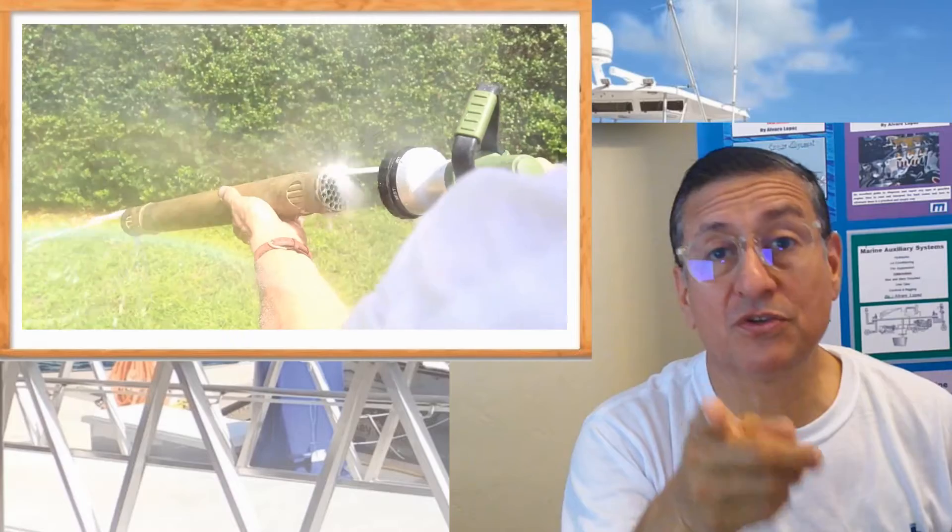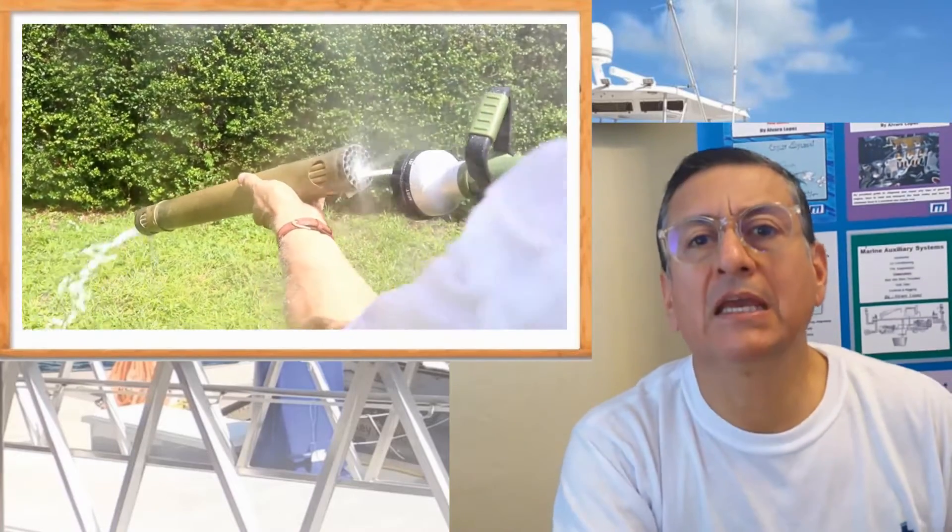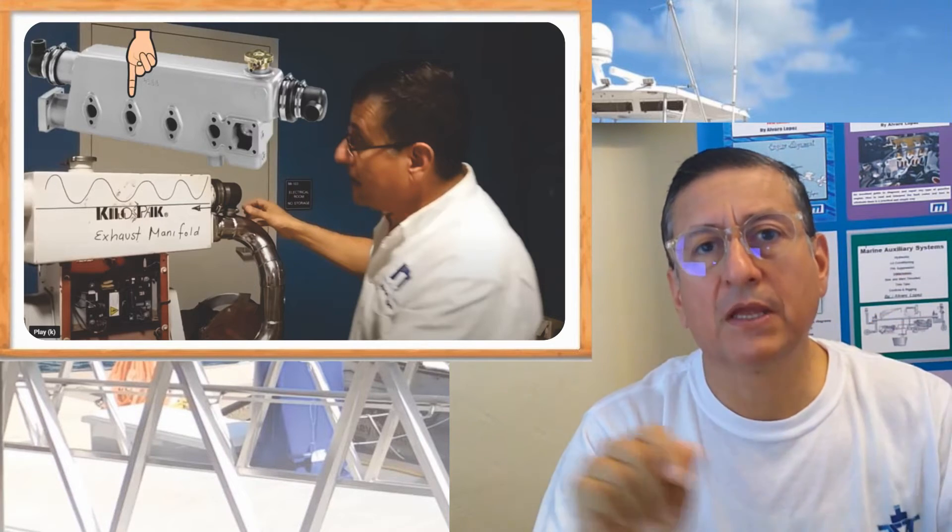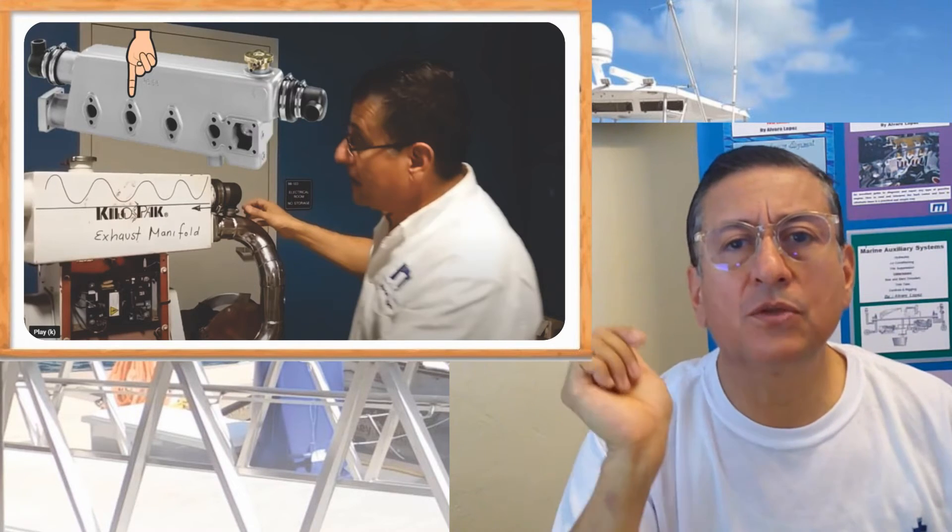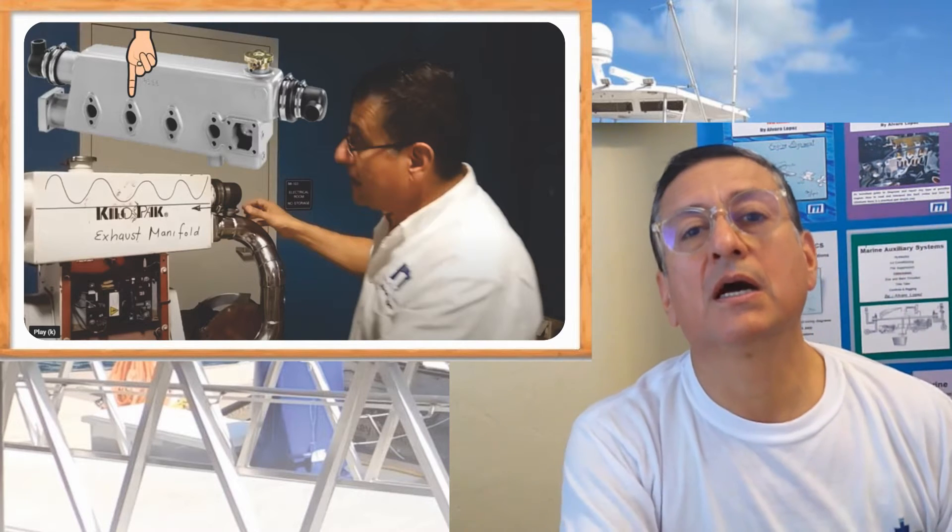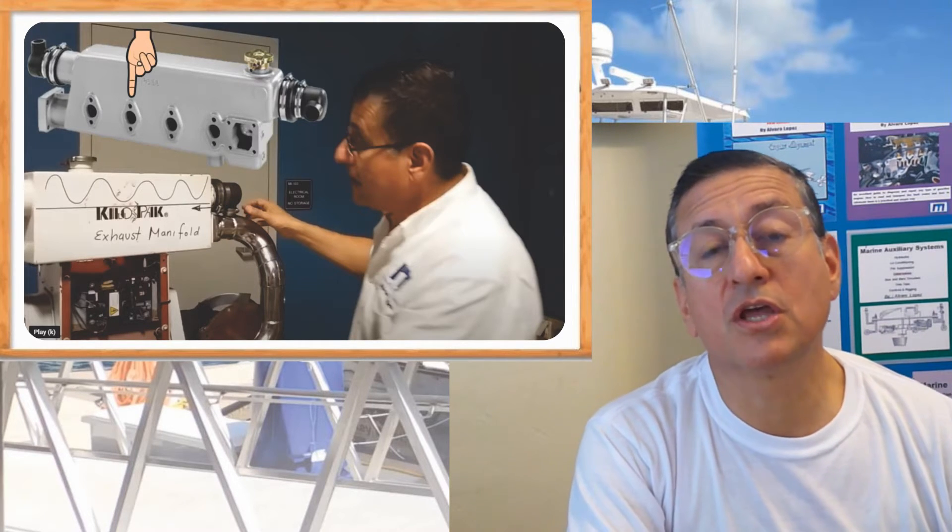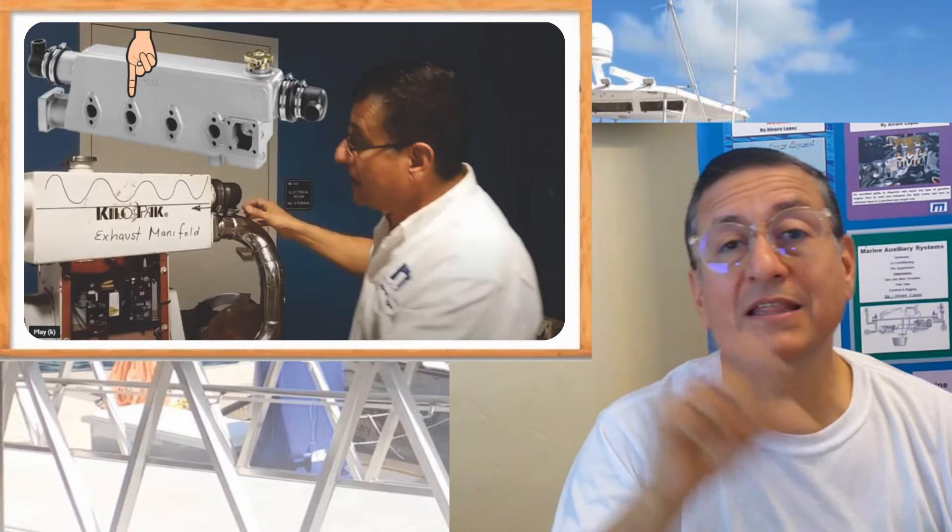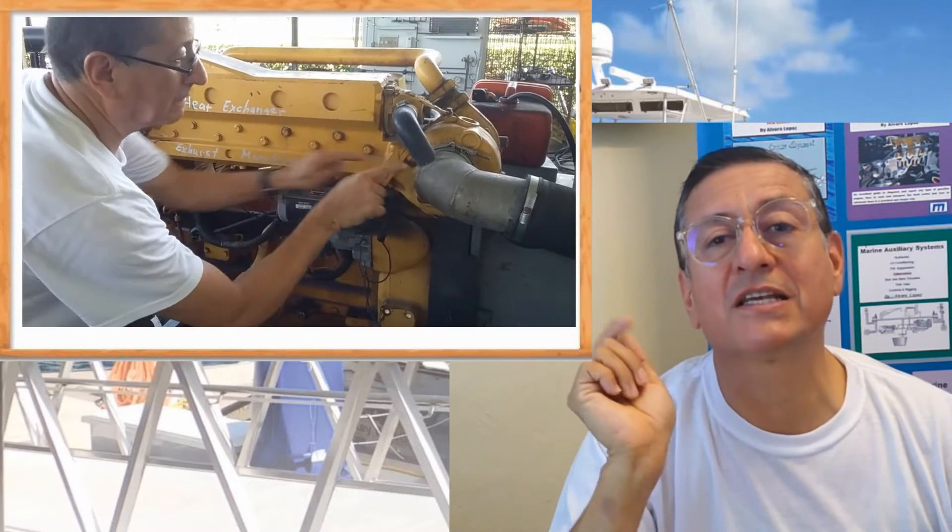This is the situation in gasoline engines. In diesel engines, remember that the exhaust manifold and the heat exchanger are together. They are separated, but they're together in the same unit. On top is the heat exchanger, and at the bottom, the exhaust manifold. They converge in the elbow of the exhaust.